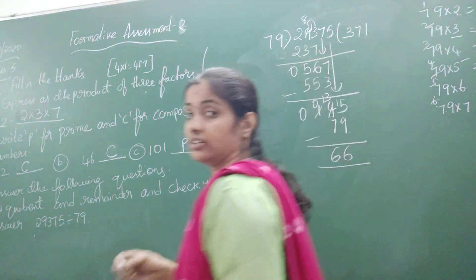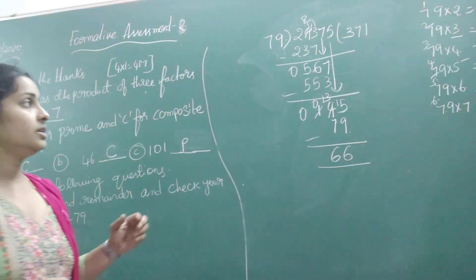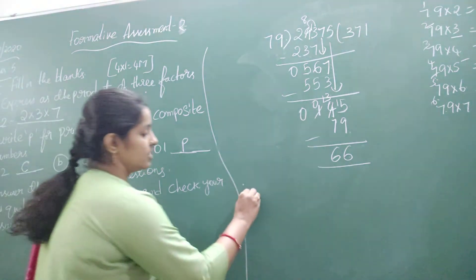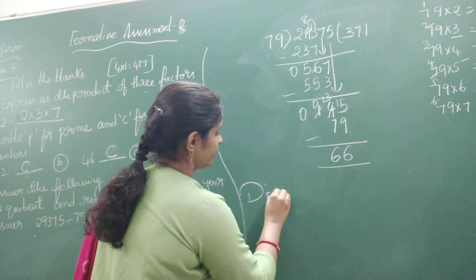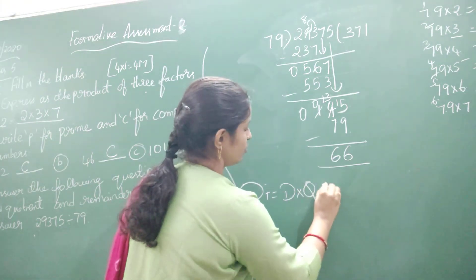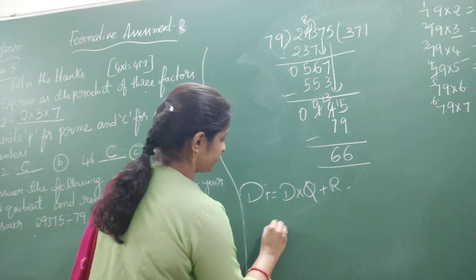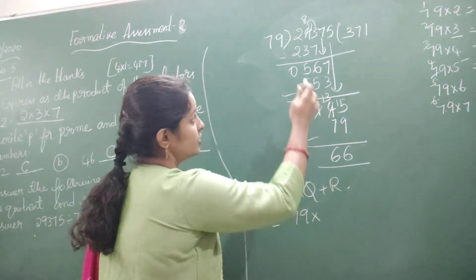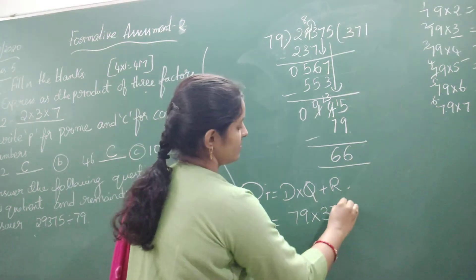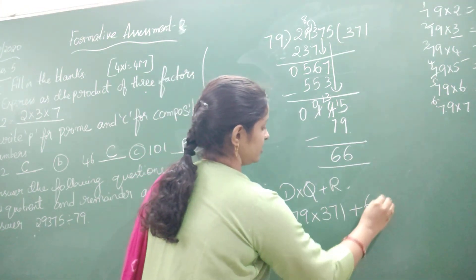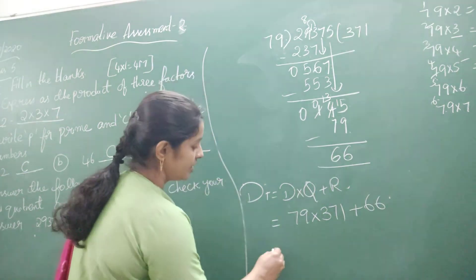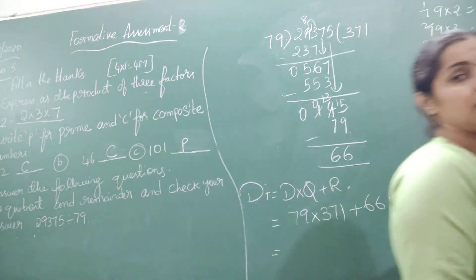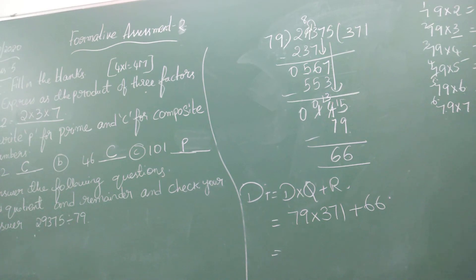Now we need to check the answer whether it is correct or not. Let us take the formula: dividend equals divisor into quotient plus remainder. The divisor is 79 into quotient, which is 371, plus remainder 66. Now let us multiply 79 into 371.